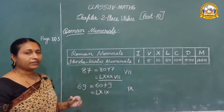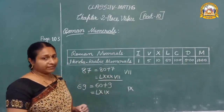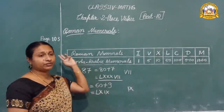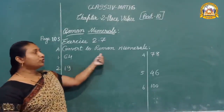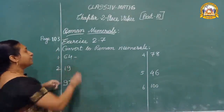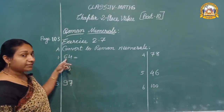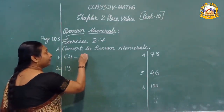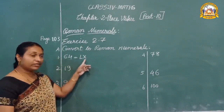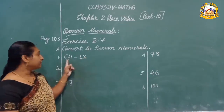Next, let us do exercise 2.7. Page number 103 — take your book. Question number A: Convert to Roman numerals. First, 64. For 60: fifty plus ten — L and X — LX. Then for 4: five minus one — IV. So 64 is LXIV.